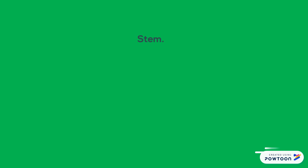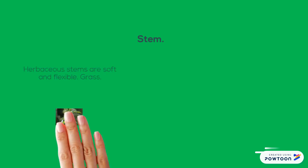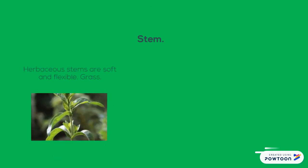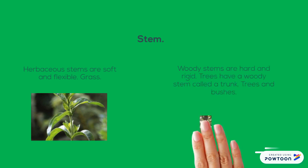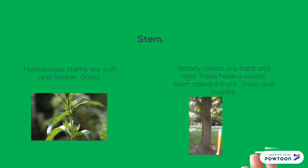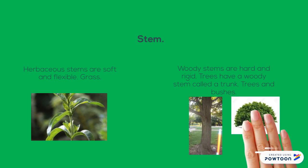There are different types of stems. Herbaceous stems are soft and flexible, such as grass. Woody stems are hard and rigid. Trees have a woody stem called a trunk. Trees and bushes are some examples.